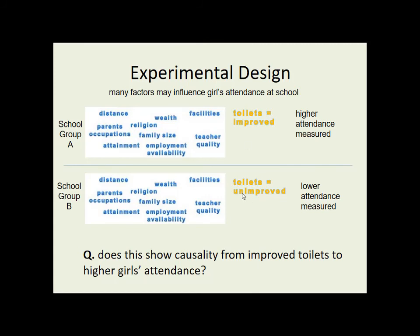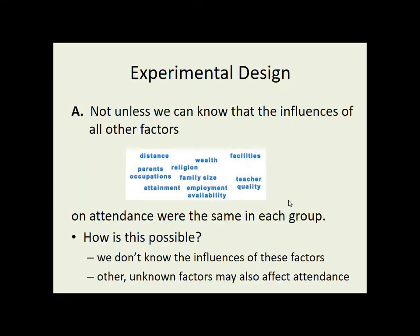The answer is we need to be reasonably confident that the influence of all these other things was the same on each group. But how is that possible when we don't know what the influence of distance, religion, family size, or teacher quality is? We might be able to guess or get information from somewhere else, but it's really hard to be confident about that. And if that's not enough, we also don't know whether we have the whole list — there could be other unknown factors also having an effect on attendance. So we need to be confident that the effects of all these other things are equal if this method is going to make any sense at all. That's where we turn to Randomised Controlled Trials, which I'll talk about in the next clip.